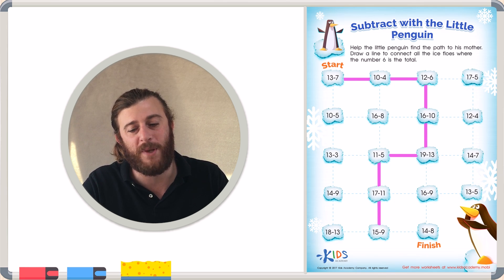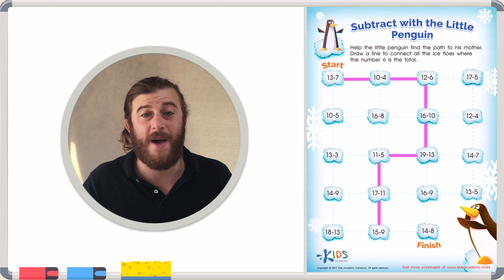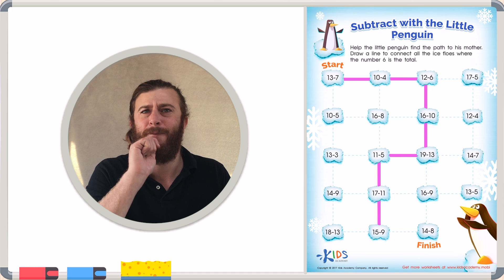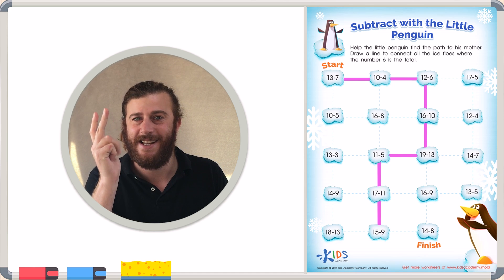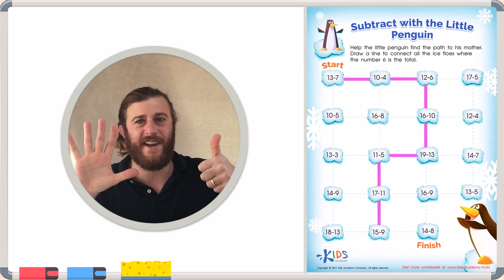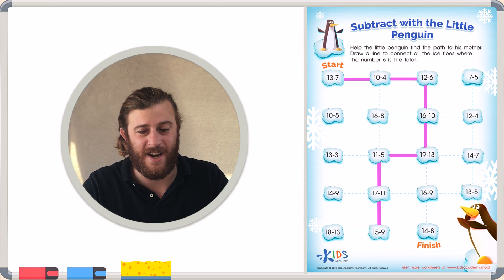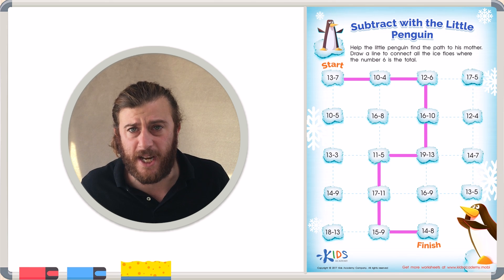Now there's only one more place to draw a line to. So let's check our work just to be sure. Let's count backwards from 14 to 8. 14, 13, 12, 11, 10, 9, 8. 6 fingers. We've now drawn a line to all the subtraction questions that have a difference of 6.